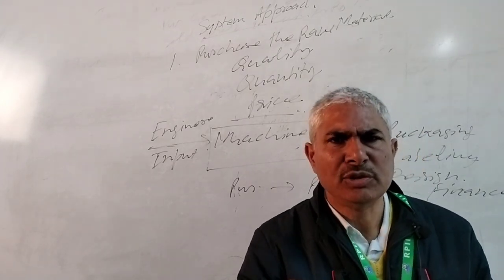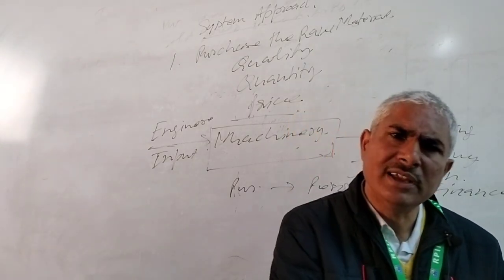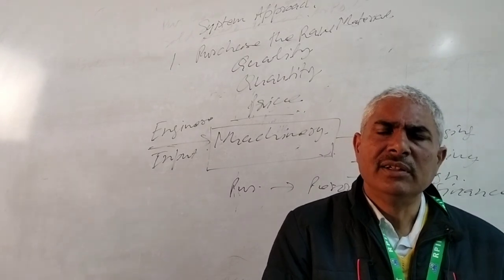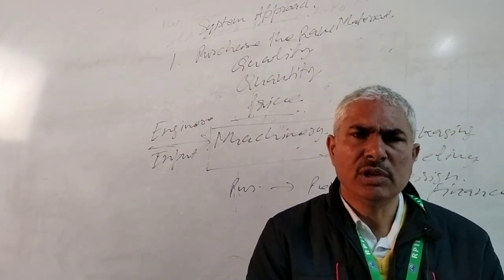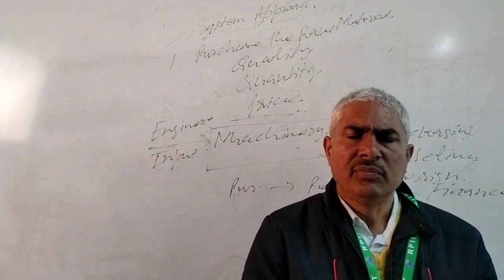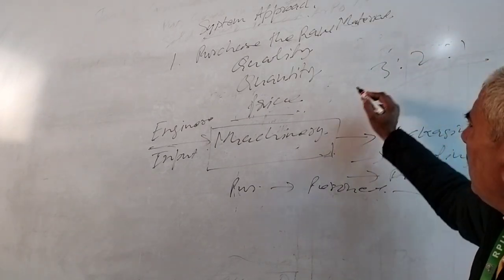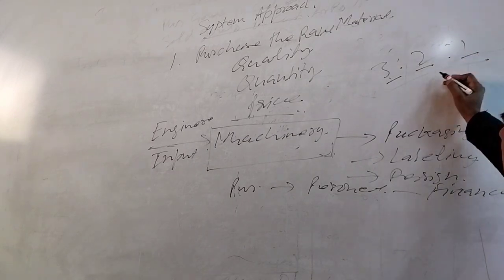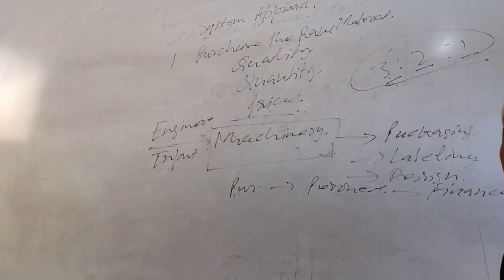X, Y, and Z are three partners in the business. X introduces rupees three lakhs, Y introduces rupees two lakhs, and Z introduces rupees one lakh. If they decide to share profit and losses in equal ratio, that cannot stand. According to the agreement, profit and loss must be distributed in the ratio 3:2:1, because each partner shares according to the ratio of their contribution into the business.